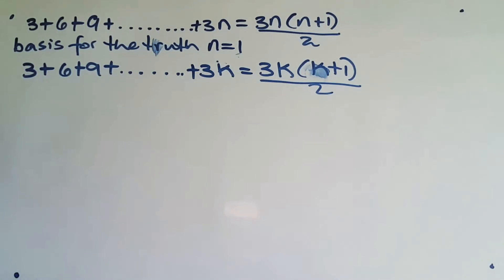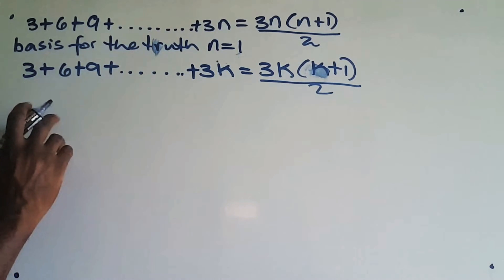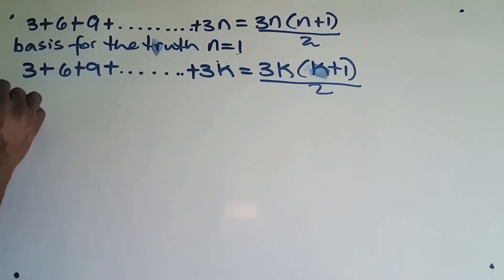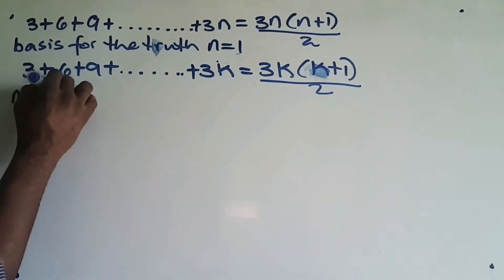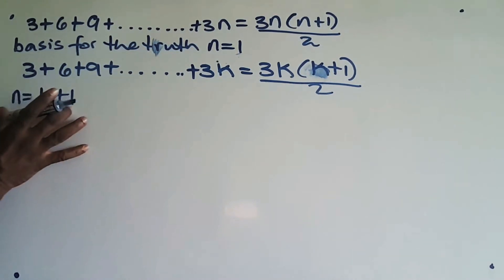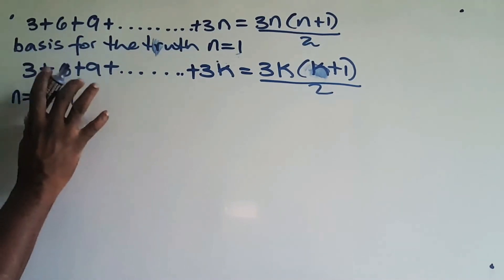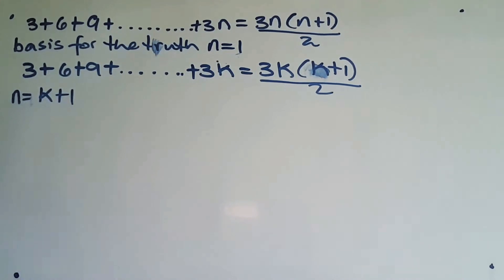The final step is that we now need to take it one step further. We need to prove this true for k plus 1. So we're going to let n equal k plus 1. We're going to prove this true for k plus 1 by substituting k plus 1 wherever we have k, and then see what happens — rewriting for k plus 1.